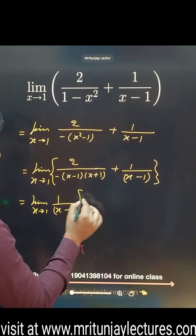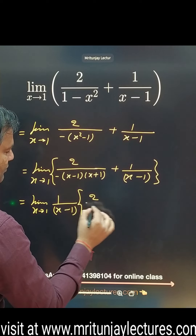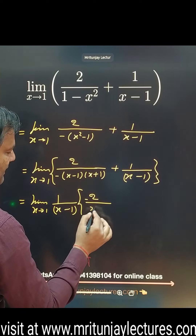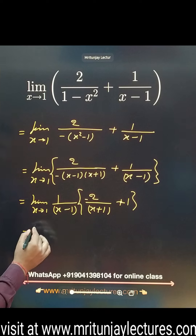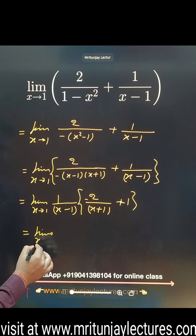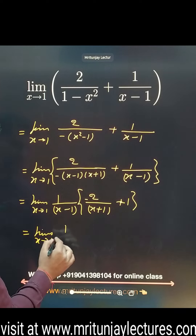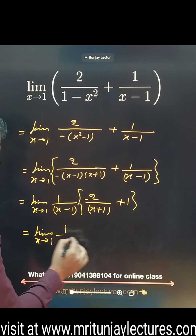Limit x tends to 1. Taking minus as common, we get x squared minus 1, and that factors as x minus 1 into x plus 1. Then we have limit x tends to 1 with minus 2 upon x minus 1 into x plus 1.